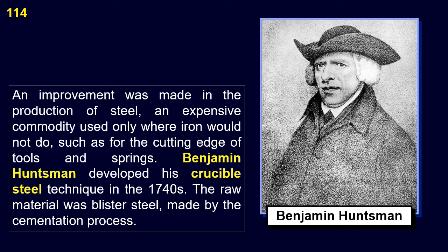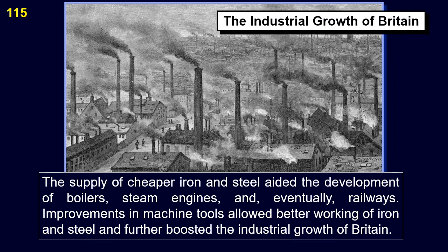An improvement was made in the production of steel, an expensive commodity used only where iron would not do — such as for the cutting edge of tools and springs. Benjamin Huntsman developed his crucible steel technique in the 1740s; the raw material was blister steel, made by the cementation process. The supply of cheaper iron and steel aided the development of boilers, steam engines, and eventually railways. Improvements in machine tools allowed better working of iron and steel and further boosted the industrial growth of Britain.